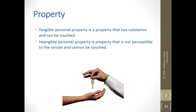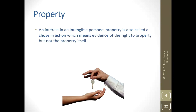Tangible personal property: a fountain pen, a hamburger — anything you can physically touch and see. Intangible: a trademark, a copyright. You can get documents that prove you have it — a piece of paper stating it exists — but not the item itself. An interest in intangible personal property is also called a chose in action, which means evidence of the right to property but not the property itself.